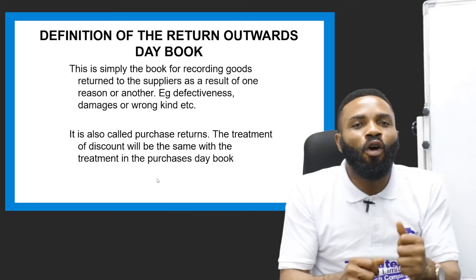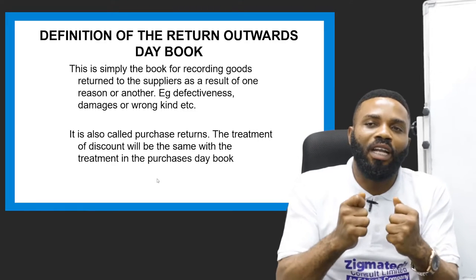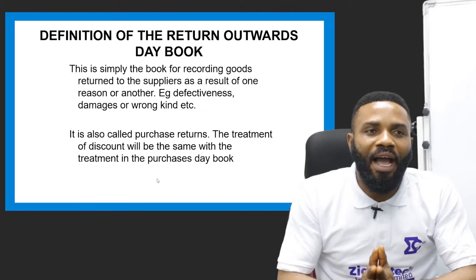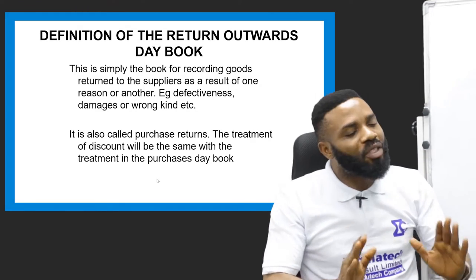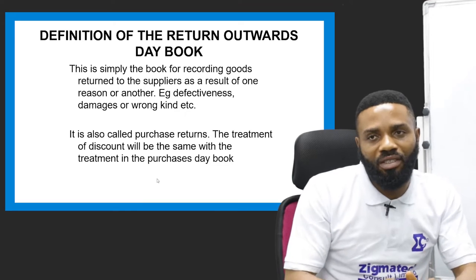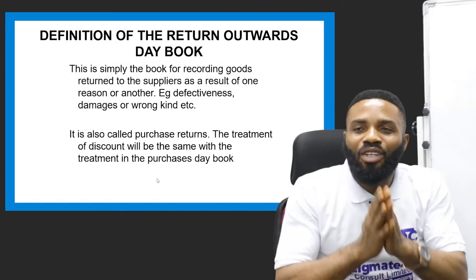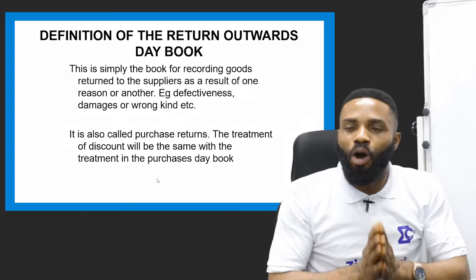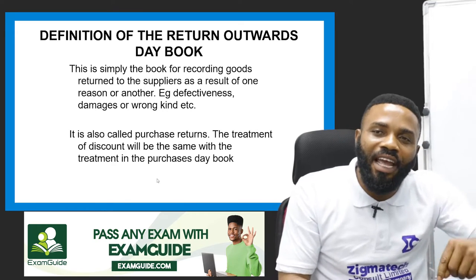Another reason for returning goods is what we call 'wrong kind' — you can order something and what is sent to you is different. When what is given to you differs from what you ordered, there is a need to return it. Basically, the returns outwards day book is prepared to record these transactions. Whenever an item is returned to the seller, you must record what has been returned because it will affect your purchases.